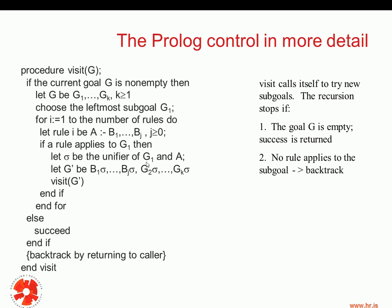We will take an example in a minute where this will become clearer. Once we have a unifier, we apply that unifier to the right-hand side of the rule we selected — to B1, B2, up to BJ — and we also apply the unifier to the remaining sub-goals G2, G3, up to GK. The result is a new current goal, which we call G', and then we call 'visit' recursively using G' as the current sub-goal.